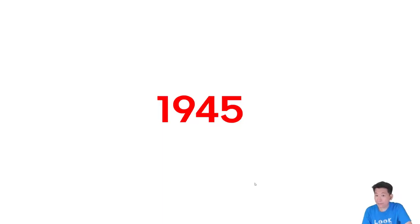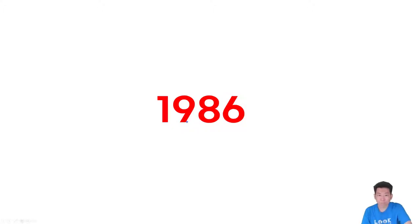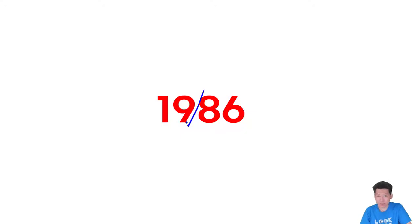이거는요, 1945라고 하셔야 됩니다. 1945. 두 자리씩 나누어 준다라는 거 알고 넘어가세요. 1986라고 하시면 되겠죠? 역시 두 자리씩 나누어서 읽어주시면 되겠습니다.